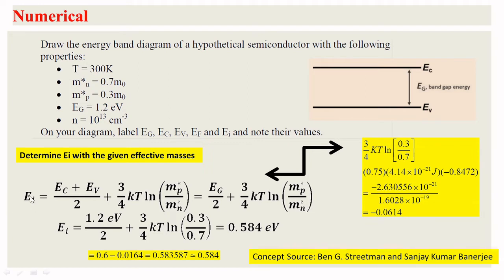In the previous lecture, we derived the intrinsic Fermi level formula with given effective masses: EI equals (EC + EV)/2 plus (3/4)KT times the natural logarithm of the ratio of effective mass of holes to effective mass of electrons. EC plus EV divided by 2 can be written as EG by 2, which is the midpoint of the band gap.